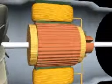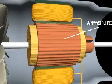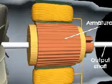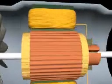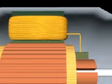The commutator is connected to a large coil of wire, called the armature, and to the output shaft. Current flows from the commutator through the armature, then back to the commutator.